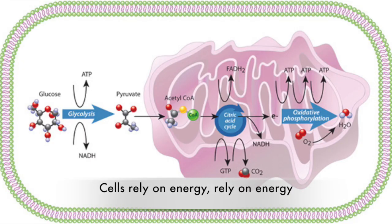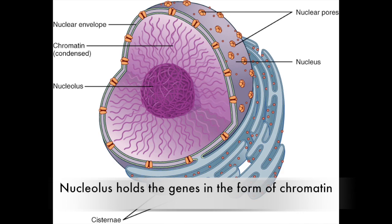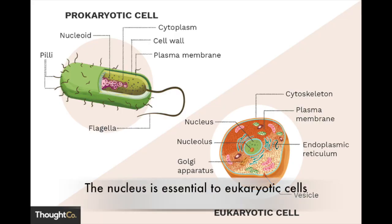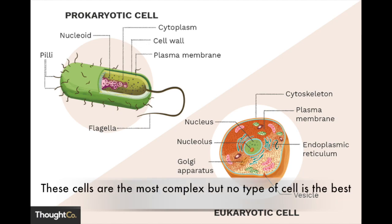Rely on energy. Nucleolus holds the genes in the form of chromatin, contained by the envelope, also called the membrane. The nucleus is essential to eukaryotic cells. These cells are the most complex, but no type of cell is the best.